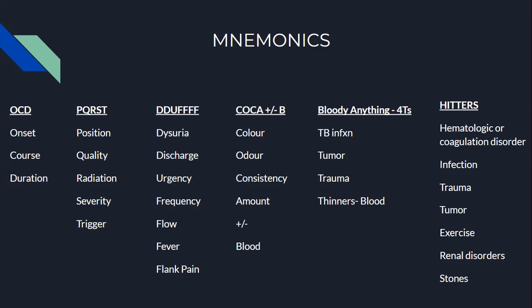If patients present with any secretion of blood in any fluids, keep in mind the four T's: TB infection (tuberculosis), tumor, trauma, or blood thinners. And finally, if a patient presents with hematuria, think of the HITTERS mnemonic: hematologic or coagulation disorder, infection, trauma, tumor, exercise, renal disorders, or stones.